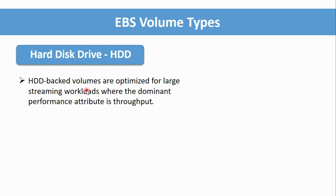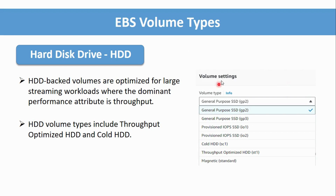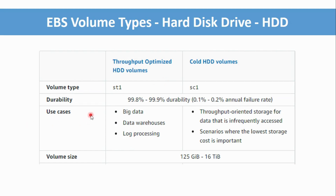For Hard Disk Drive volumes, they are optimized for large streaming workloads where the key performance attribute is throughput. There are two types: Throughput Optimized HDD and Cold HDD. When creating an EBS volume from the AWS console, you can see options including General Purpose SSD GP2, Provisioned IOPS IO1 and IO2, Cold HDD, and Throughput Optimized HDD. Volume size ranges from a minimum of 125 GB to a maximum of 16 TB.